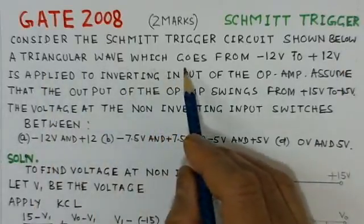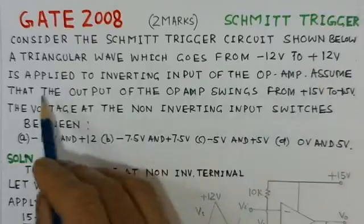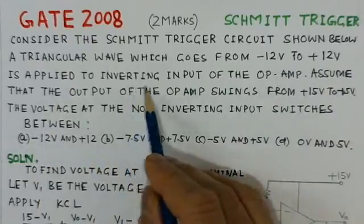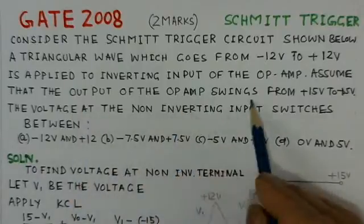A triangular wave which goes from minus 12 volts to plus 12 volts is applied to inverting input of the op-amp. Assume that the output of the op-amp swings from